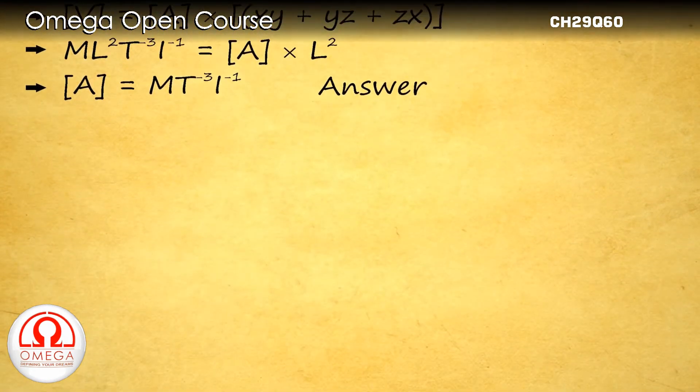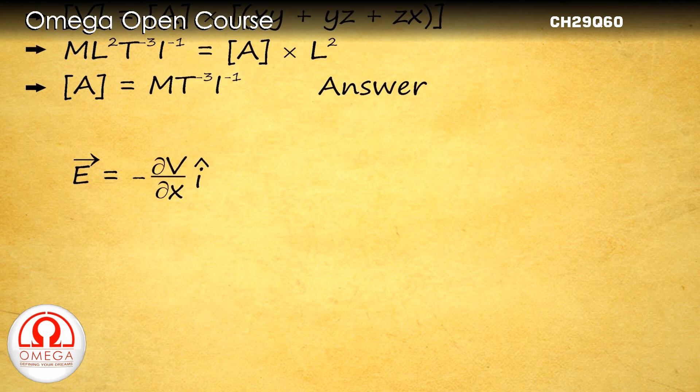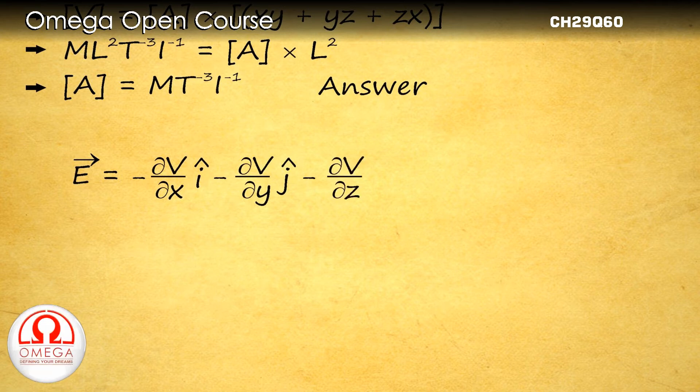We can get the expression for electric field by partially differentiating the potential. The electric field vector is given by minus partial derivative of V with respect to x times i cap, minus partial derivative of V with respect to y times j cap, minus partial derivative of V with respect to z times k cap.